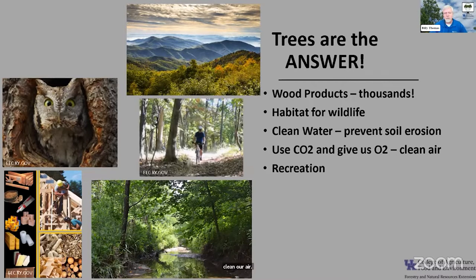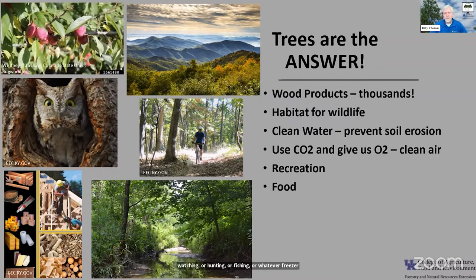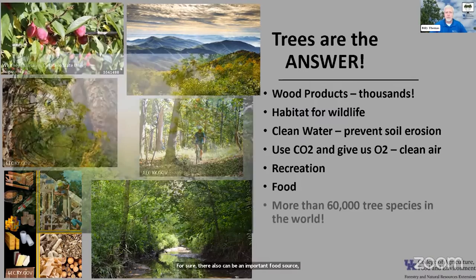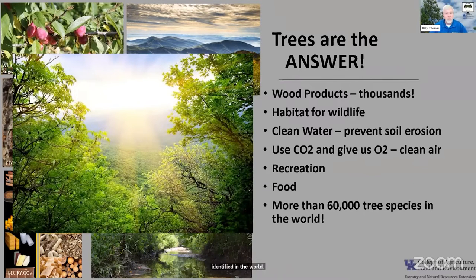Trees also provide an important place for recreation. Here in Kentucky, about half the state is covered in forest land, with most of that privately held. Much recreation happens there, whether that's mountain biking, hiking, bird watching, hunting, or fishing. Trees can also be an important food source, not only for wildlife but also for people, as we see in these plums here. The bottom line is there are a lot of trees in the world — over 60,000 tree species have been identified.